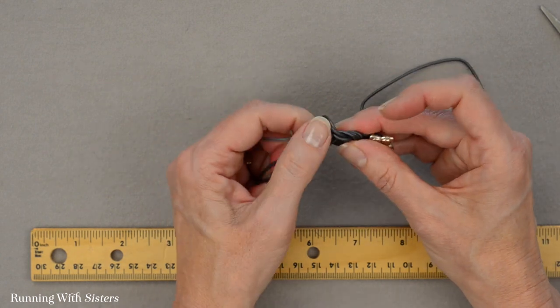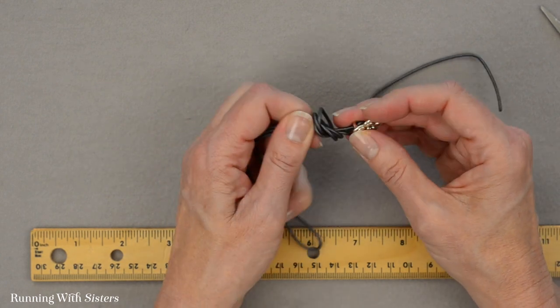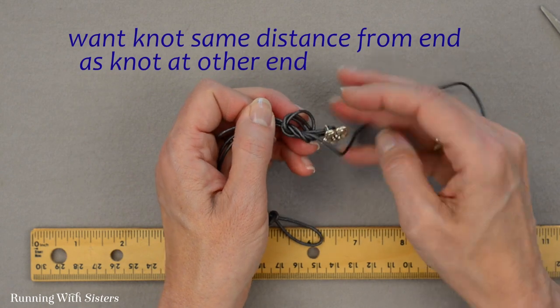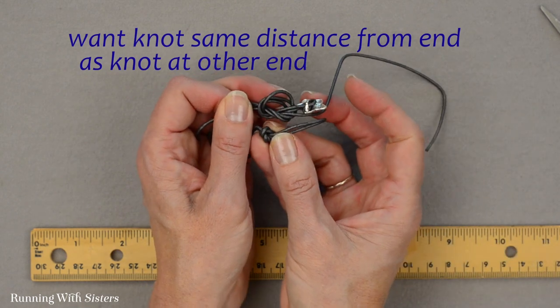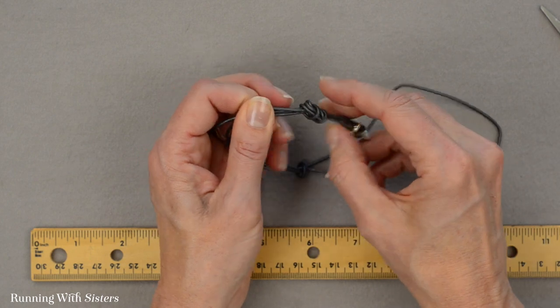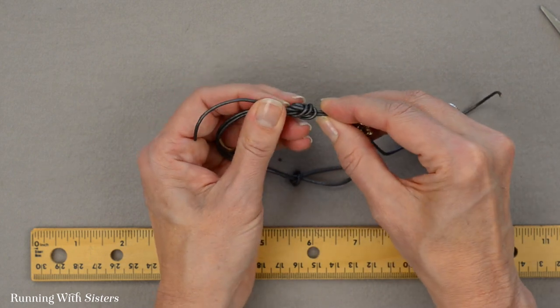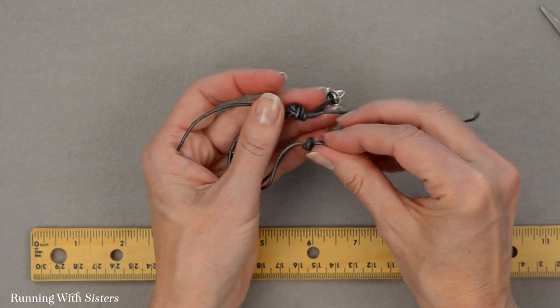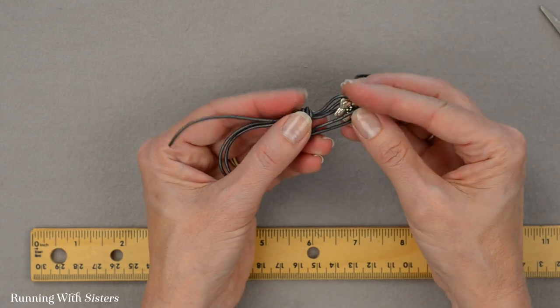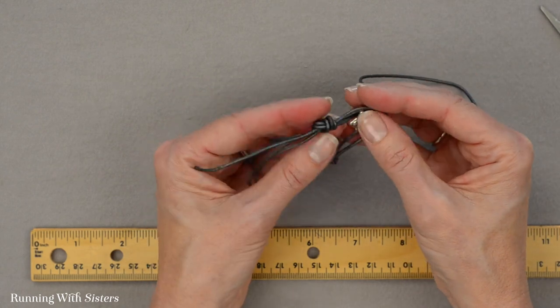And I want this knot to end up about the same distance from the end as this loop. So I'm going to kind of loosely tie the knot like that, and then I want to check and see if those knots ended up about the same distance apart. Actually, I'm going to move this one down just a tiny bit like that.